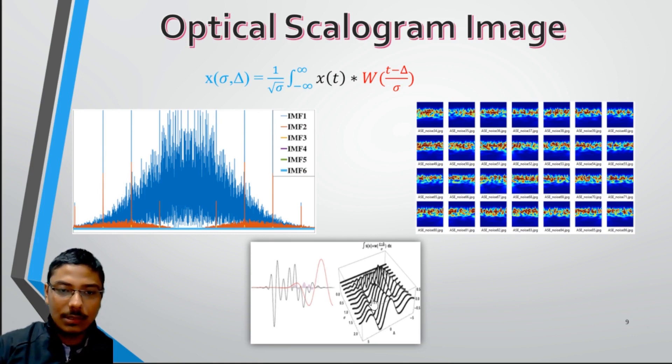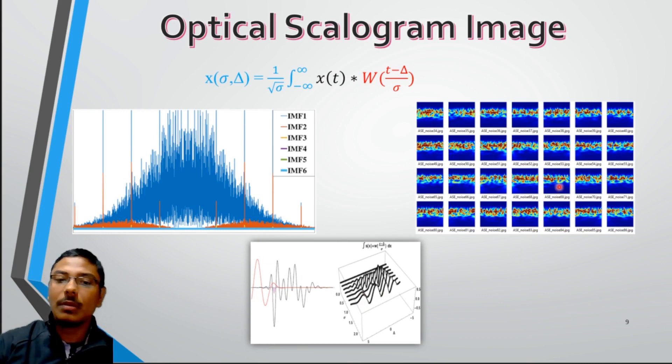So after that, we send this output, the IMF2, 3 and 4, to the wavelet function. Using this wavelet function, we convert this VMD output to the optical scalogram images. These are the optical scalograms.